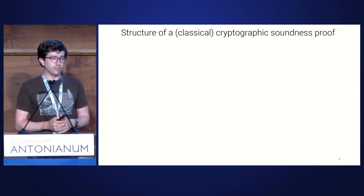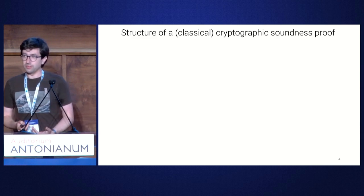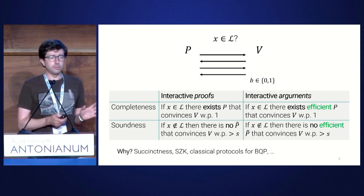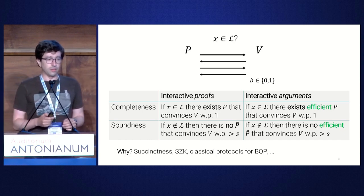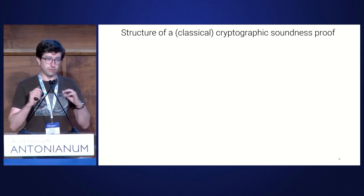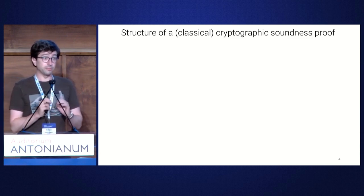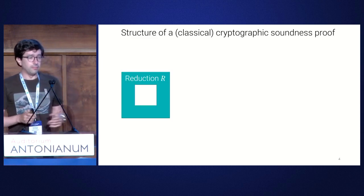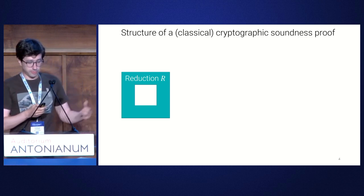What I'm going to talk about today is how you actually prove the soundness property for interactive arguments. The way you prove it is quite different to proving soundness for an interactive proof, because of this efficiency component. There will be some computational assumption that you reduce to. The reduction takes in a hard problem — something like a one-way function, finding a discrete logarithm, or factoring an integer.